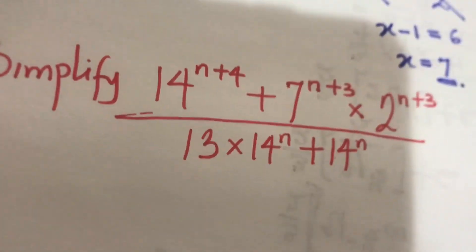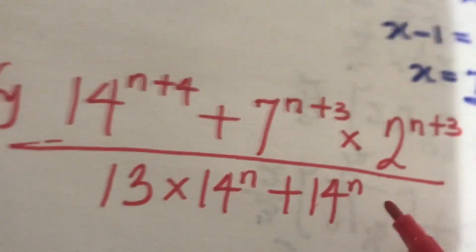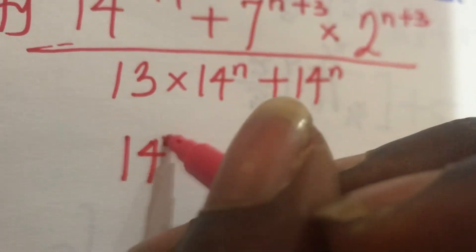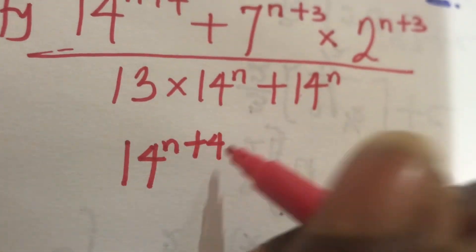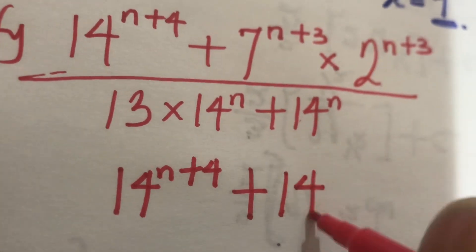Guys, let's look at this simplification as well. At this point we can multiply these two together to give us 14 to the power n plus 4 plus seven times two will give us 14 to the power n plus 3.